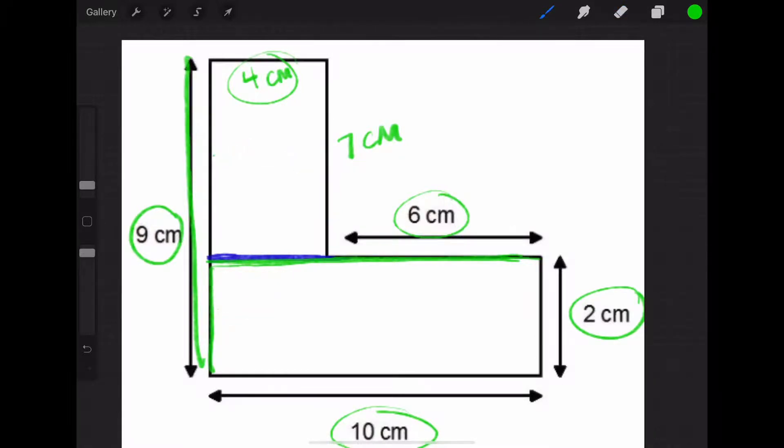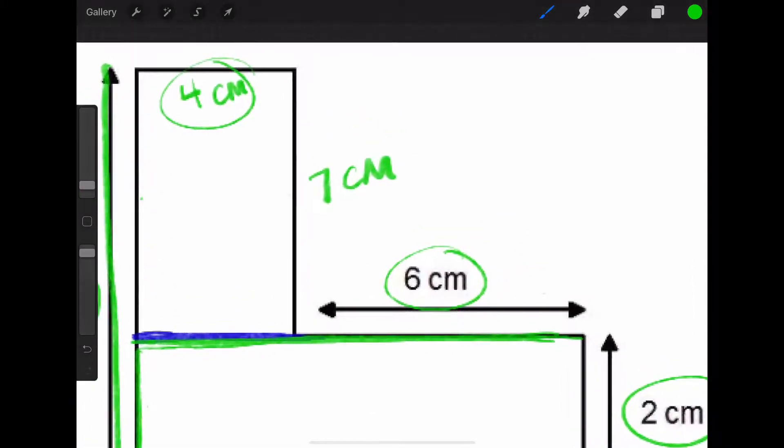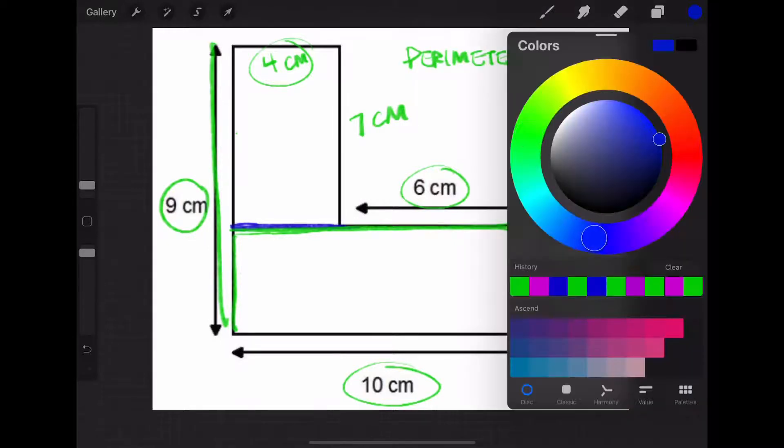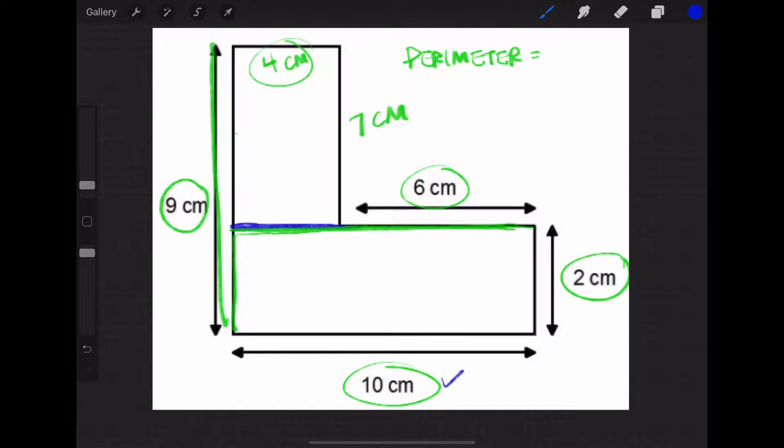Let's do perimeter first. Our perimeter is just going to be the sum of all the sides, just like you would do with any other shape. If I want to just add these one by one, we have 10 plus 9 is 19, plus 4 more is 23, plus 7 more is 30, plus 6 more is 36, plus 2 more is going to be 38. So our total perimeter is going to be 38 centimeters.